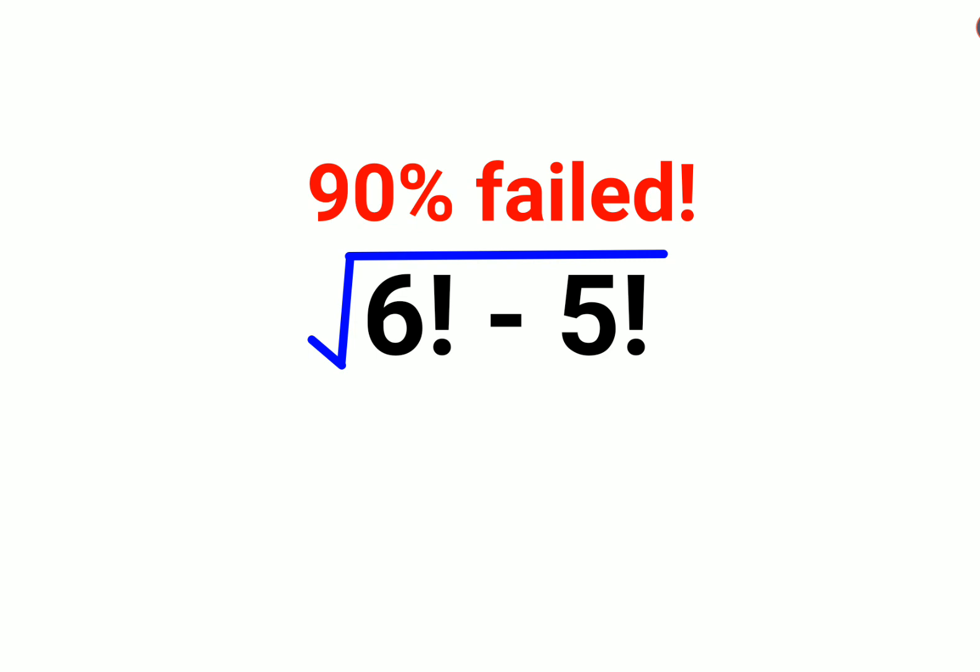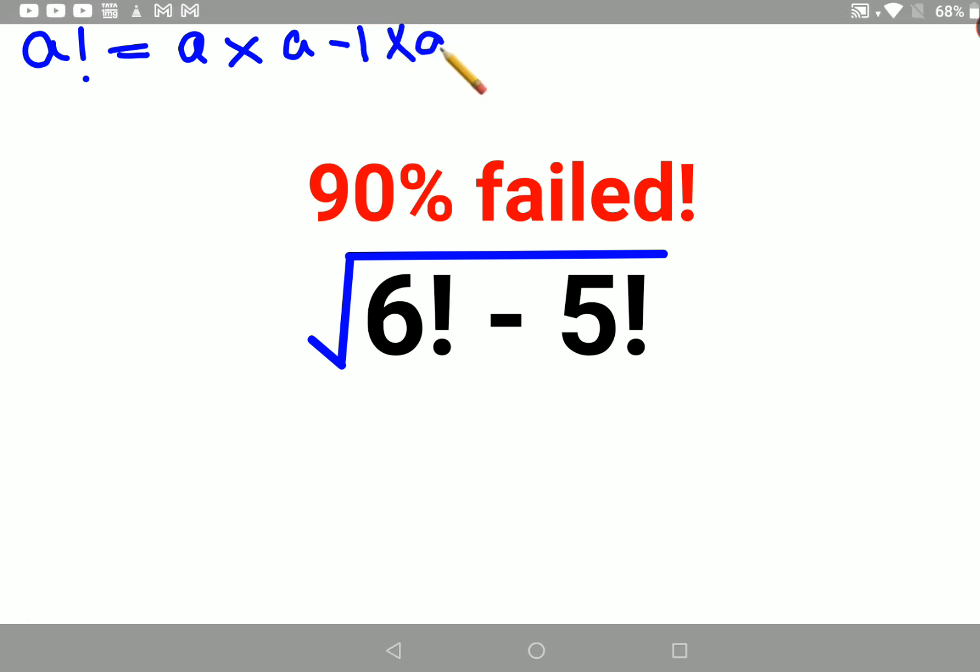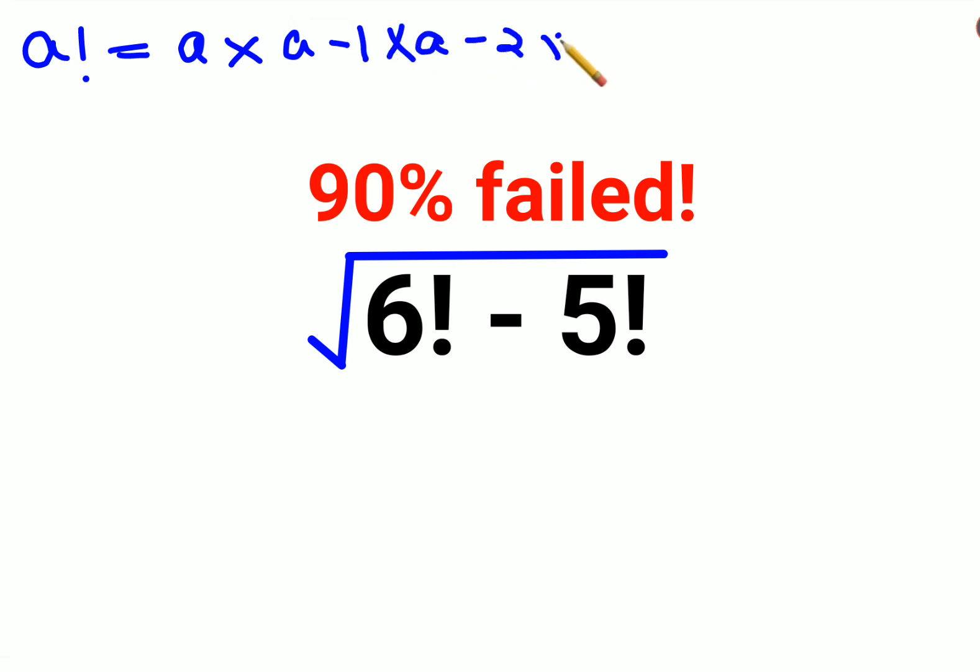Please understand whenever you have a factorial sign ahead of a number, you can do the mathematical representation by multiplying that number with the next consecutive numbers in decreasing order. You keep doing this until you reach the value of 1.